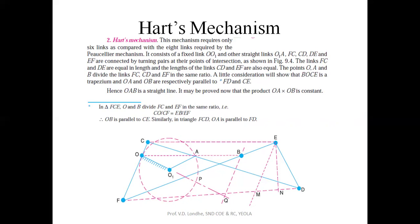If such a configuration is given for the Hart mechanism, then point E will trace a straight line path. If you're designing the Hart mechanism and the link length ratio is the same as per this given statement, then only this point will trace the straight line path. Now we will see the animation part.